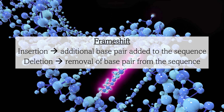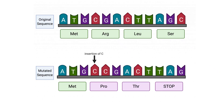A single nucleotide base pair that is added to the DNA sequence can cause a frameshift mutation if it occurs within the coding region of a gene. This changes the reading frame of the sequence, potentially altering every subsequent amino acid and resulting in a non-functional protein. In this example, cytosine has been inserted into the DNA sequence, which has a knock-on effect in polypeptide synthesis, resulting in different amino acids being formed and causing a frameshift.